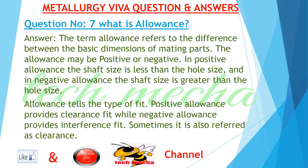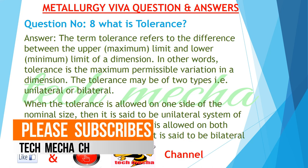Question 7: What is Allowance? Answer: The term Allowance refers to the difference between the basic dimensions of mating parts. The allowance may be Positive or Negative. In Positive Allowance the shaft size is less than the hole size, and in Negative Allowance the shaft size is greater than the hole size. Allowance tells the type of fit — Positive Allowance provides Clearance Fit, while Negative Allowance provides Interference Fit.